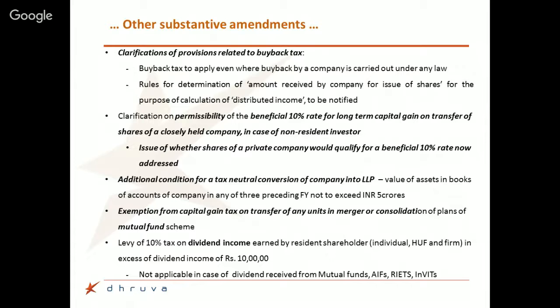Conversion of a company into an LLP has been made more onerous by including an additional condition: the company proposing to convert must not have had assets exceeding ₹5 crore in the previous three years, in addition to all existing conditions. Separately, there is now an exemption from capital gains tax on transfer of units where two plans of mutual fund schemes merge and new units are issued — a welcome clarification.